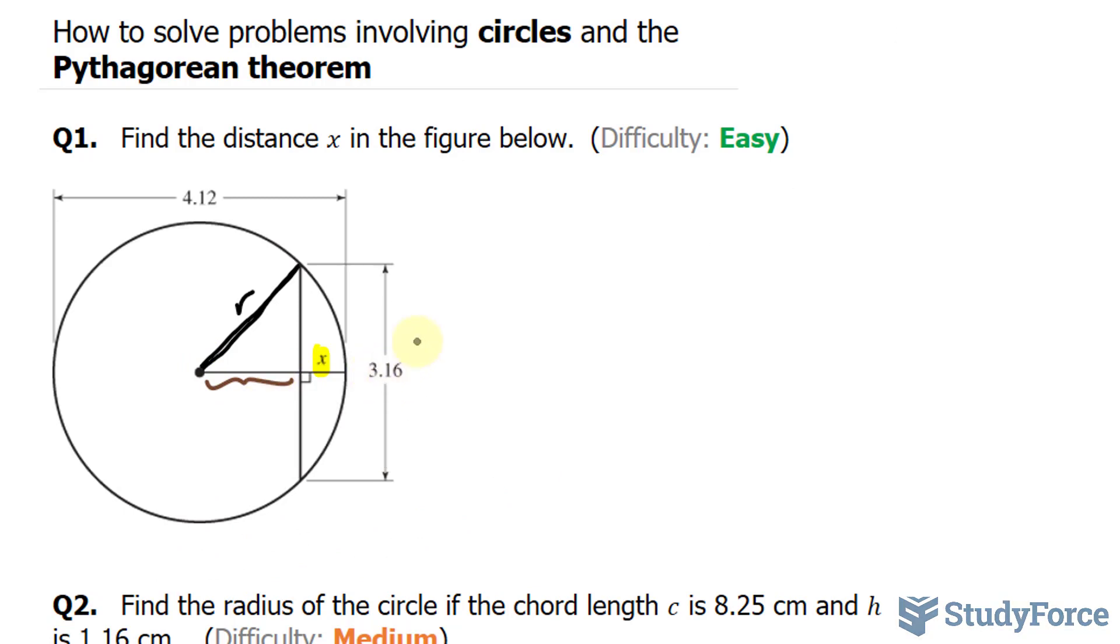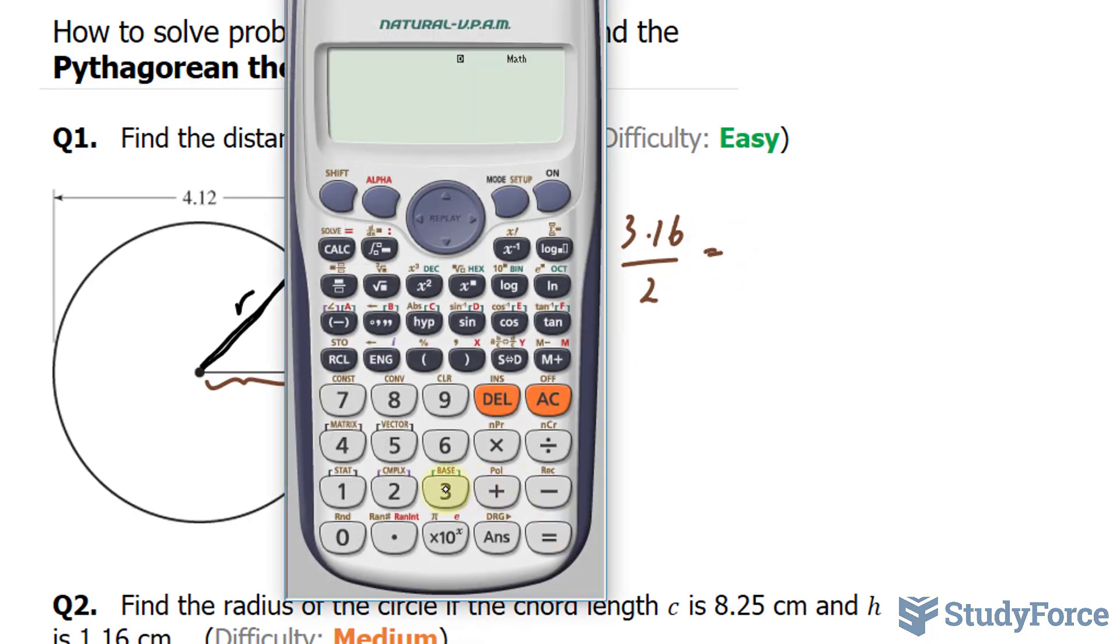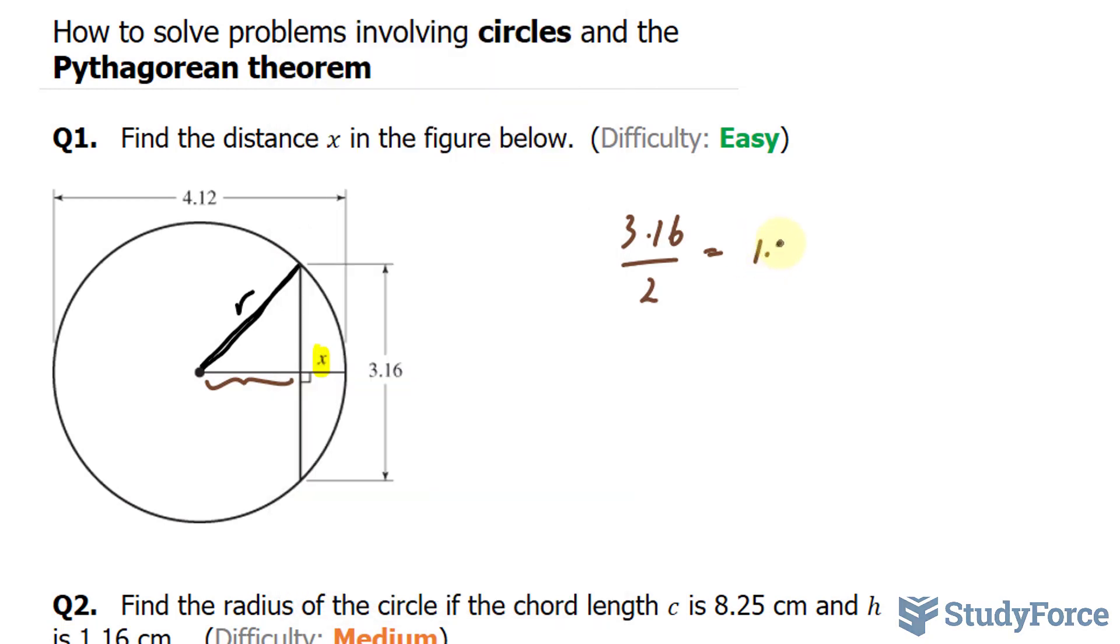I'll first take 3.16 and divide it by 2. Using our calculator, we have 3.16 divided by 2, that's exactly 1.58. Just to give you an idea of what we just found, that's the length from here to here, 1.58.